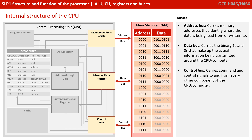The next bus is the data bus, and this is bidirectional, meaning information can flow both ways. This bus is responsible for carrying the actual binary ones and zeros that make up the information being transmitted around the CPU. The final bus, which is also bidirectional, is the control bus, and this is responsible for carrying command and control signals to and from every other component on the CPU — for example, it sends memory read and memory write control signals to main memory.